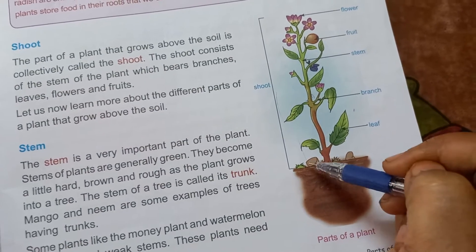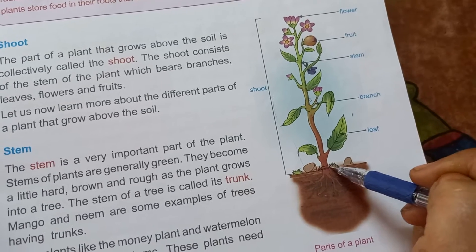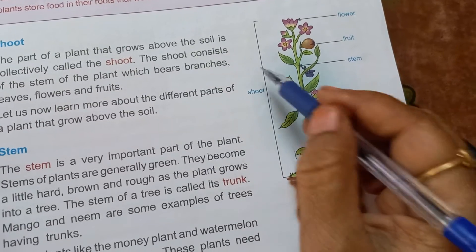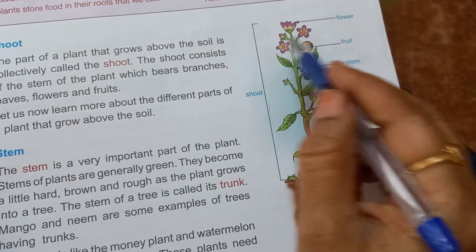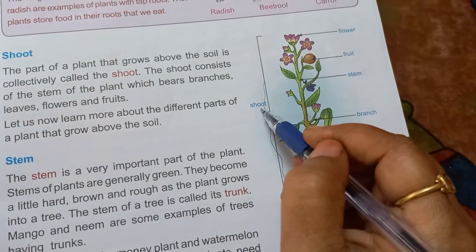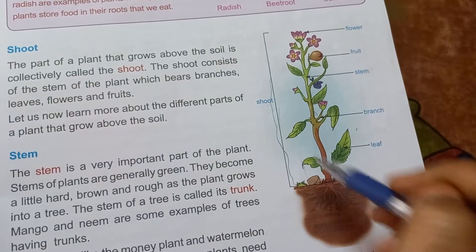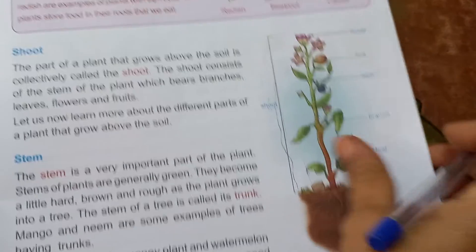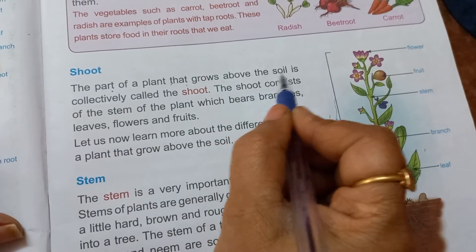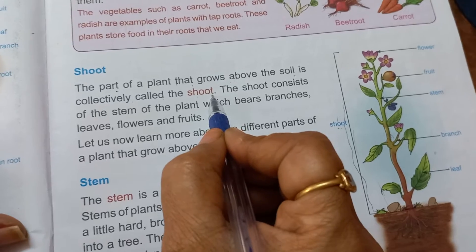The part which is above the ground — that is the part of a plant which is above the soil — it is called the shoot. One name for all these parts is shoot. The part of a plant that grows above the soil is collectively called the shoot.